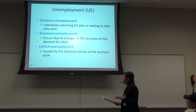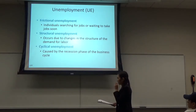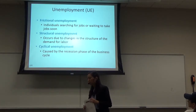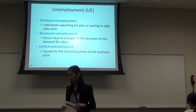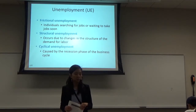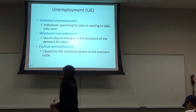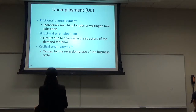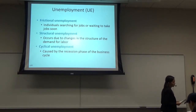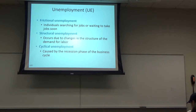Structural unemployment is the most serious kind because it occurs when the market structure has changed, so your skills are no longer needed. To get another job, you need job retraining. And cyclical unemployment is caused by recession — without the recession, you should be able to be employed, but you're out of your job because of the recession.